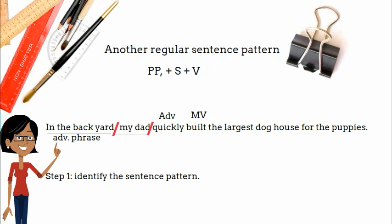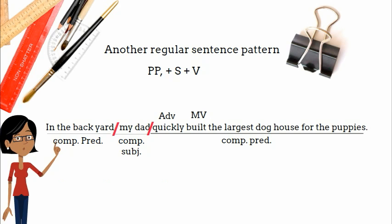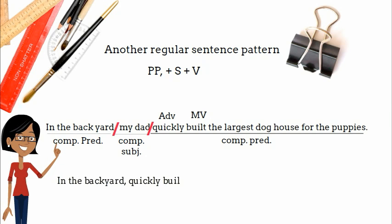Everything after the comma at the beginning of the sentence and before the verb is the complete subject, so you will identify the remaining parts as the complete predicate. The complete predicate of this sentence is in the backyard, quickly built the largest doghouse for the puppies.